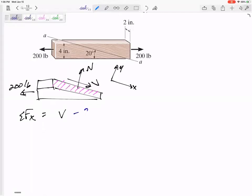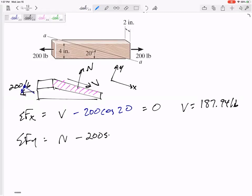But here, I don't know if this makes sense. This would be 200 cosine 20. Yeah, I need to break this up into its two components. I would get V, 187.94 pounds. Summing the forces in Y, N, and then 200 sine 20 is 68.4 pounds.